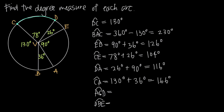The last two are major arcs. For major arc ACD, I start at A, come up to C, and then over to D. Going the other way would exceed 360 degrees, which we never want. So going clockwise from A to C to D, that's 36 plus 130 plus 78. Alternatively, since the 90-degree and 26-degree angles are the only ones excluded, we can do 360 minus 90 minus 26, giving us 244 degrees for arc ACD.